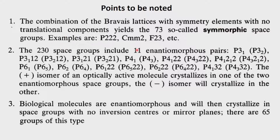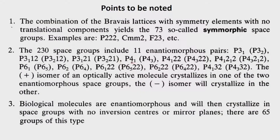Apart from that, in the 230 space groups there are 11 which are enantiomorphous pairs — like right hand and left hand pairs. For example, P31 has translations of one-third and two-third, while P32 has two-third then one-third. If the first is right-handed, the second is left-handed. These enantiomorphous space groups are very interesting when dealing with optically active molecules.